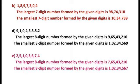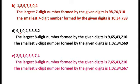The next questions, d and e, involve eight-digit numbers — eight digits are given. Using the same method, we form the largest eight-digit number by arranging in descending order. For the smallest, since zero cannot be written on the left-hand side, we write 1 first — the largest digit after zero — then 0, and arrange the remaining digits in ascending order.